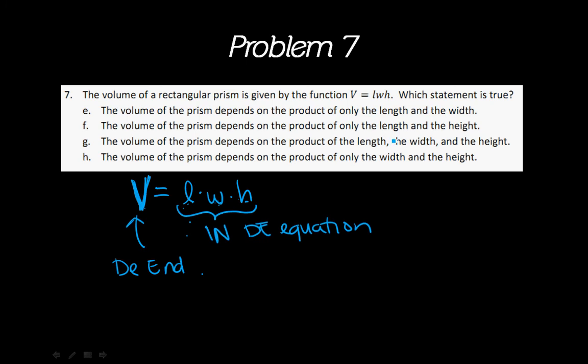So if you look in your answer choices and you read G, it says that the volume of the prism depends on the product of, remember product means multiply, length, width, and height. So length, width, and height are here, and so that would be your answer. If you look at the other answer choices, the reason that they're wrong is because they only have two of the variables at a time. For example, length and width, or length and height, or width and height. It's got to be all three. Volume depends on what all three of them are.